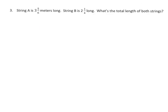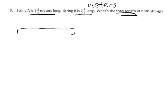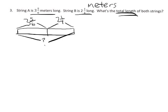The last problem for this video: we have a word problem. String A is 3 and 5/6 meters long, and String B is 2 and 1/4 meters long. What is the total length of both strings? If we wanted to, we could put this into a single tape diagram: we have 3 and 5/6, we have 2 and 1/4, and we want to find the total. So sure enough, that means addition.